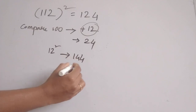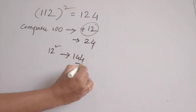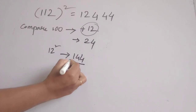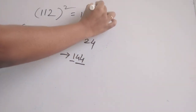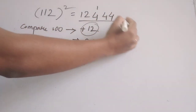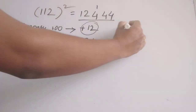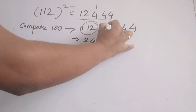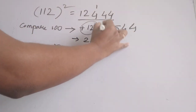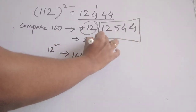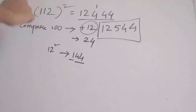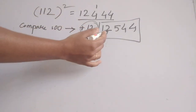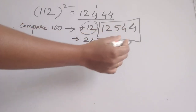For the 144, we write 44 here and take the 1 as a carry. Adding the carry, we get the digits 1, 2, 5, 4, 4. So 112 squared is 12544.